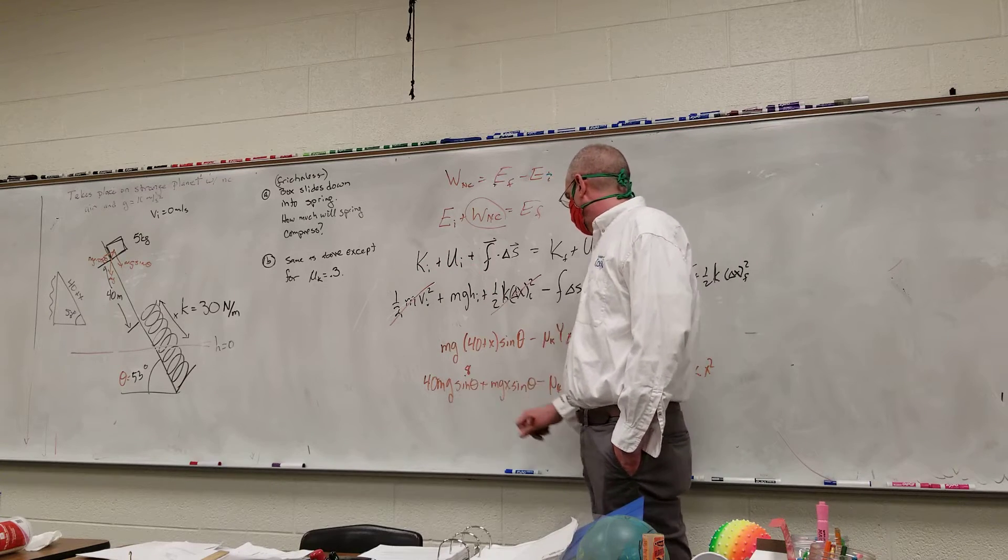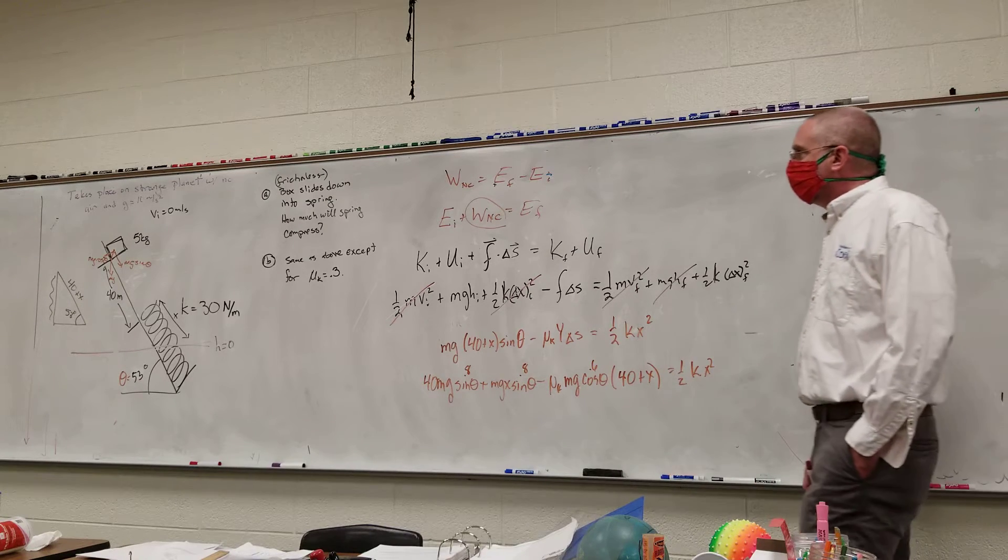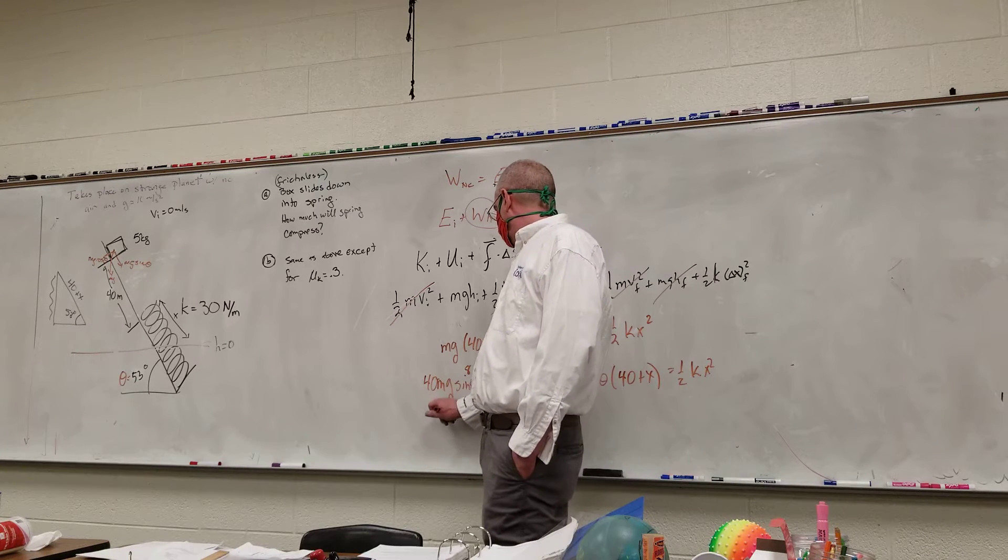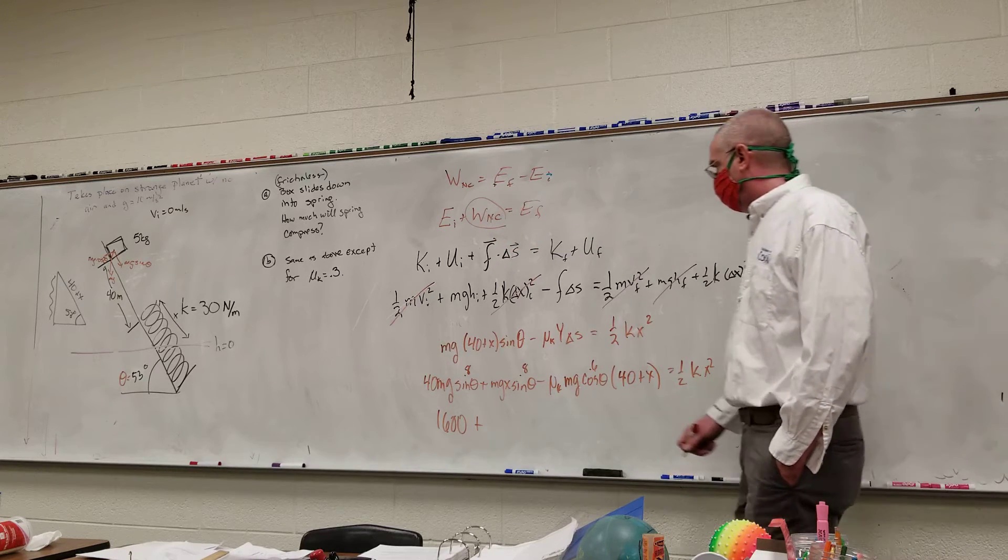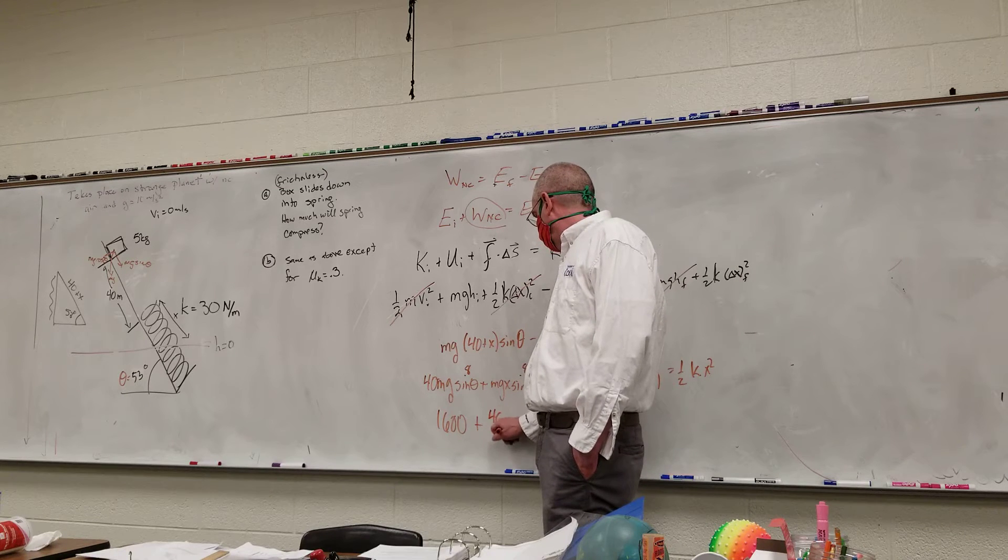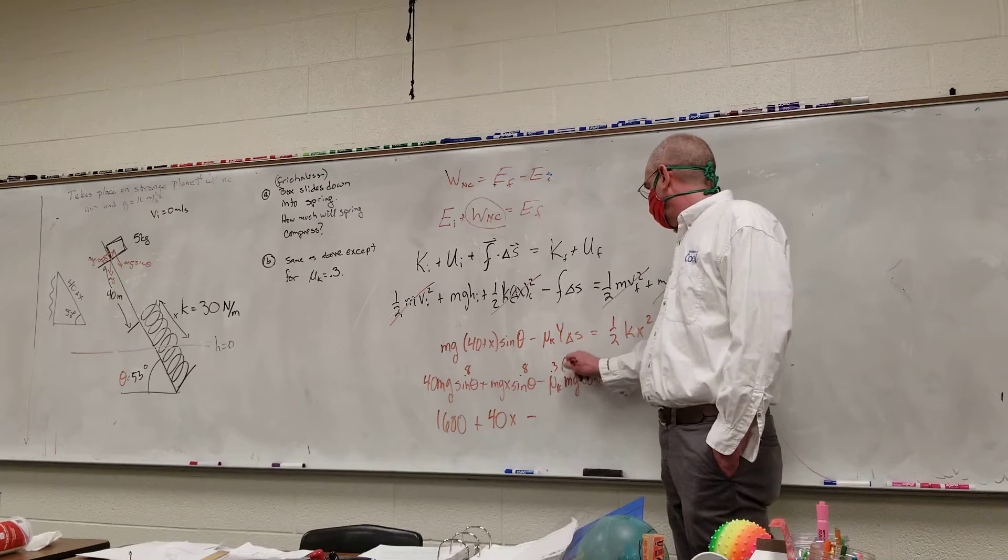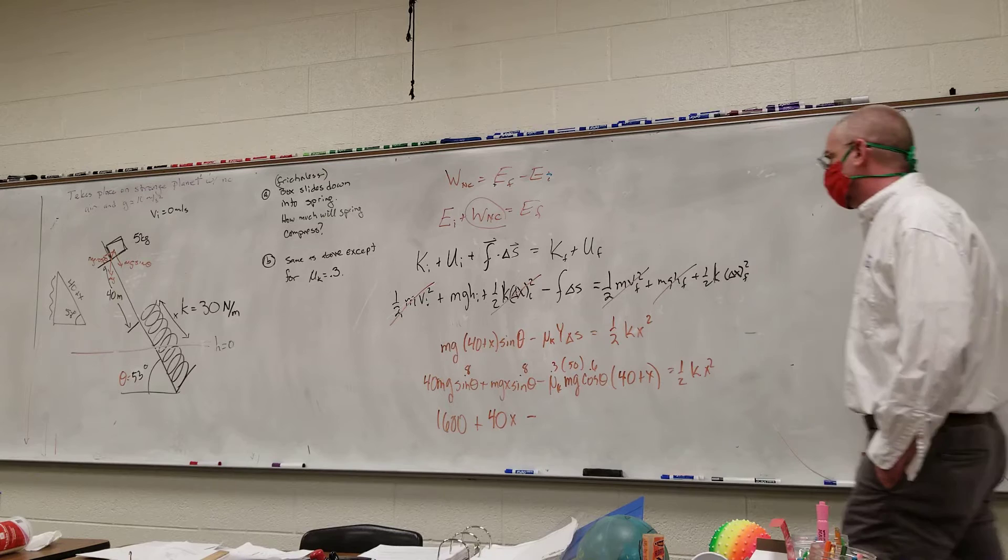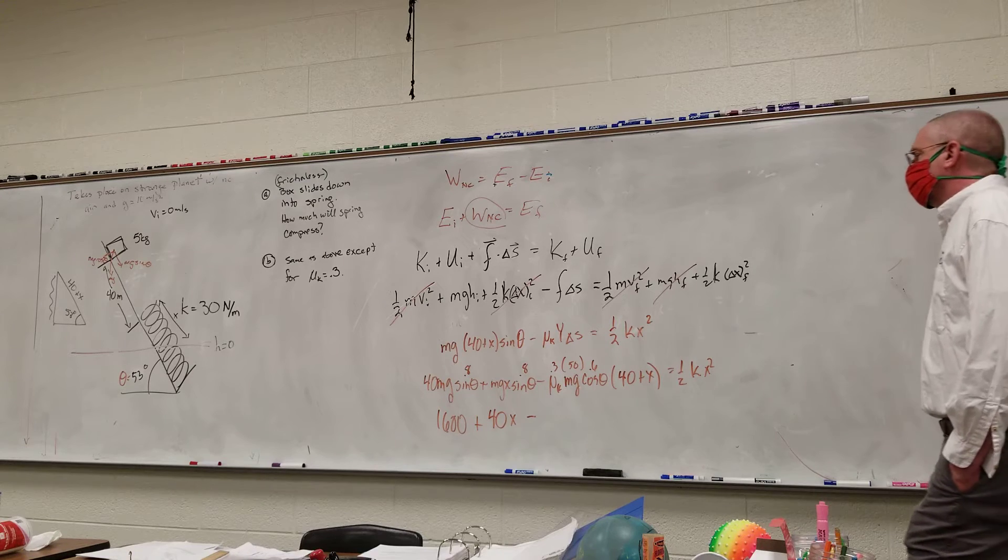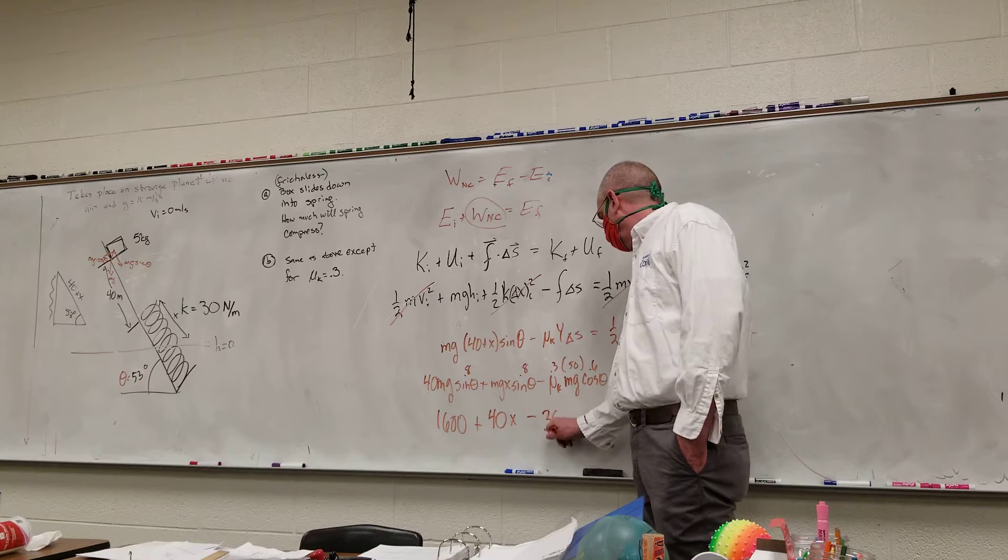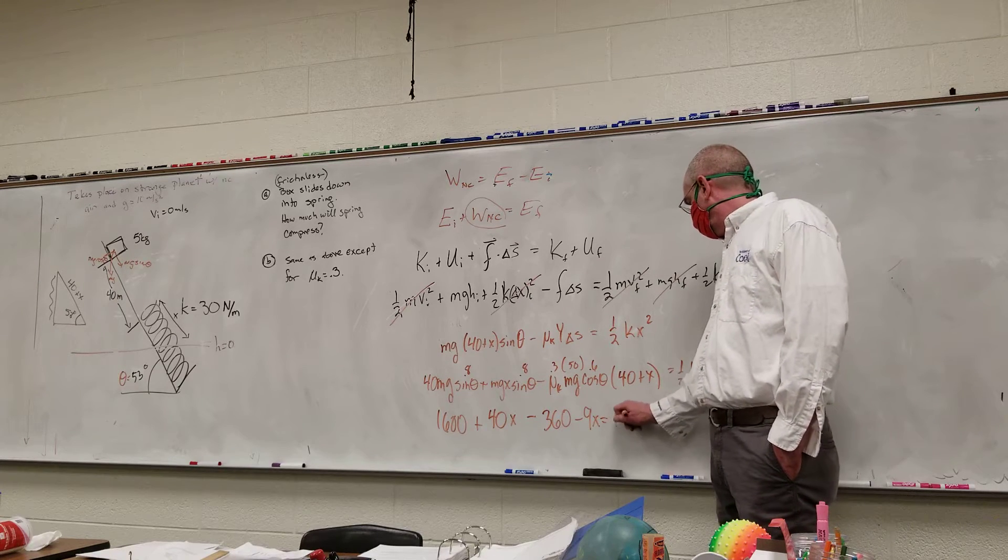So the sine of theta is 0.8, the cosine of theta is 0.6. So we have, this was 1600, plus 40x minus, that's 0.3 times 50 times 0.6. So 9 times 40 is 360, minus 9x equals, and then k is 30, so that's 15x squared.